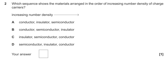Number two: which sequence shows the materials arranged in order of increasing number density of charge carriers? We know the conductor is going to be at the end, so it can't be A or B. The insulator is at the other end with semiconductor in the middle, because it is actually a semiconductor — it's in the name.